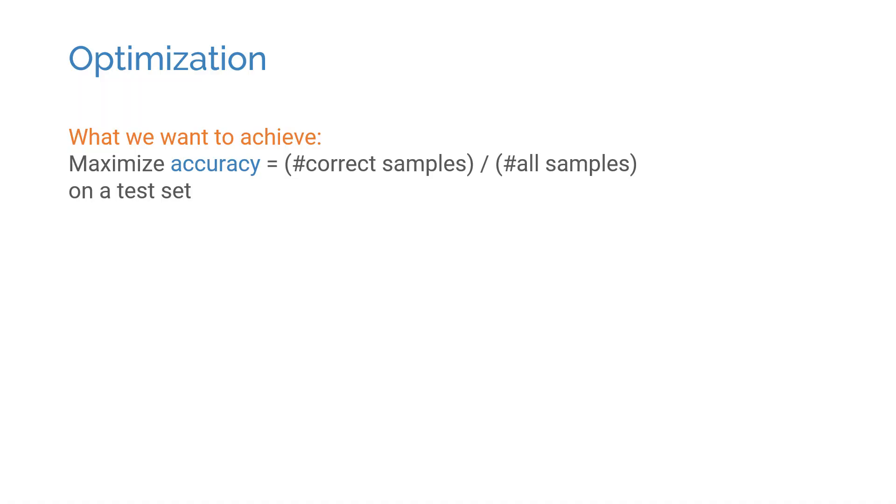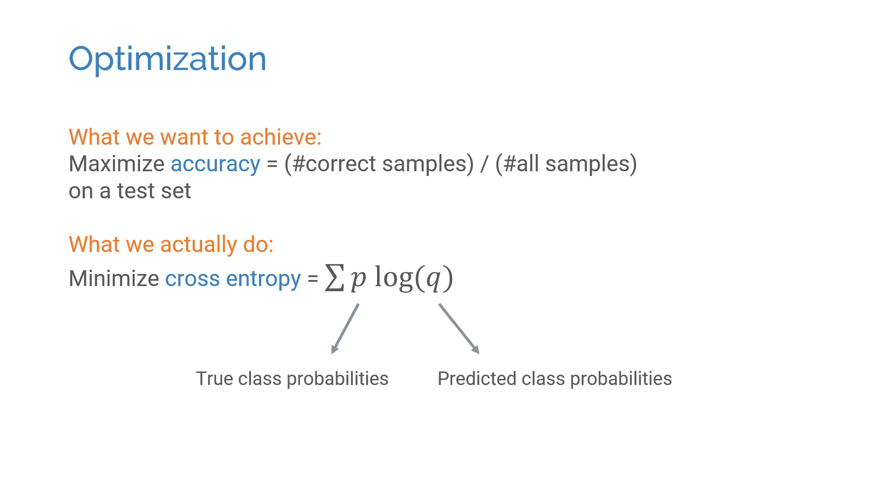Perhaps the biggest difference between pure mathematical optimization and optimization in deep learning is that in deep learning, we do not optimize for maximum performance directly. Instead, we use an easier to optimize cost function on a training set and hope that minimizing that would improve the performance on a separate test set.